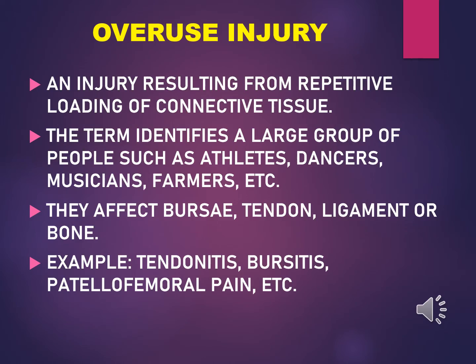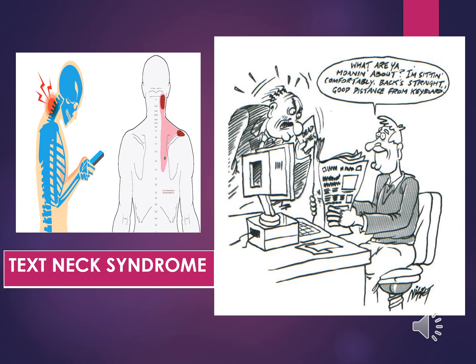Overuse injury, as the name suggests, results from repetitive loading of any connective tissue. Ligaments undergo constant cyclic load, which leads to excessive lengthening and ultimately failure. This affects a large group of people including athletes, dancers, musicians, and farmers. Overuse injuries can affect the bursa, tendon, ligament, or bone. Common examples include tendonitis, bursitis, patellofemoral pain syndrome, and other structural injuries.